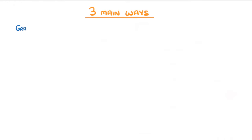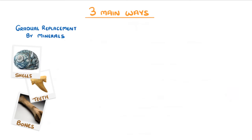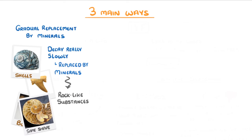The most common way that fossils form is by gradual replacement by minerals. Because body parts like bones, teeth, and shells all decay really slowly, it means that as they decay they can be gradually replaced by minerals and so they slowly form rock-like substances which are in the exact same shape and size as the original structures. So when we dig them up and separate them from the surrounding rock, what we're left with is a perfect model of the bone or tooth it was made from.